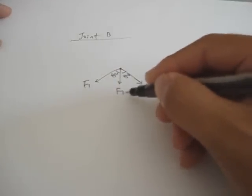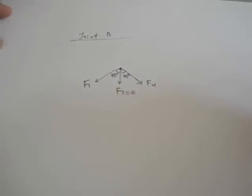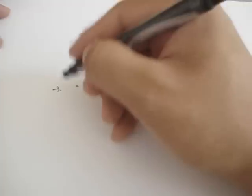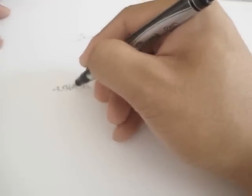Now, we know that F3 is zero from earlier. And we solved for F1 already. Let's see what that number is. F1 is minus 3.536 kip.